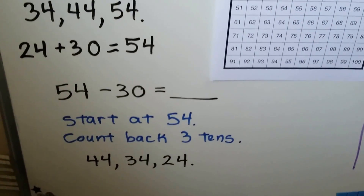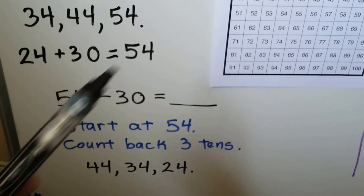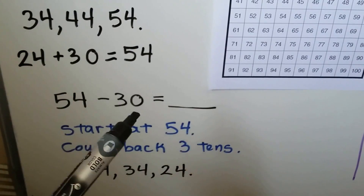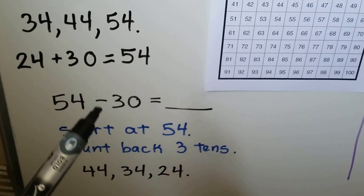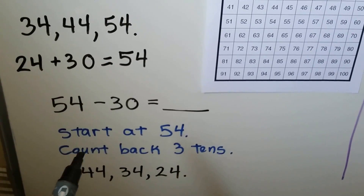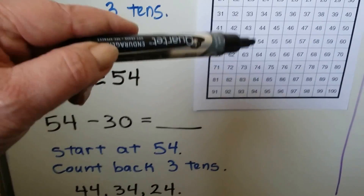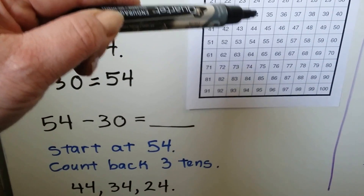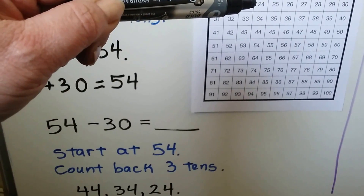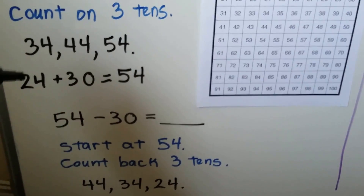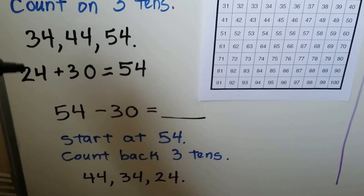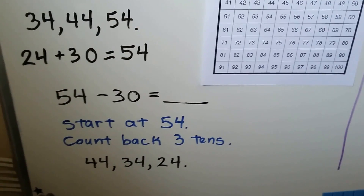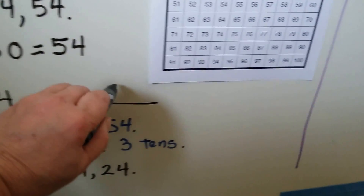The related fact would be the sum, 54, minus the 3 tens — the 30 that we added before. For 54 minus 30, we start at the 54 and count back 3 tens: 1, 2, 3. It brings us back to 24, just like the addend in the addition sentence.